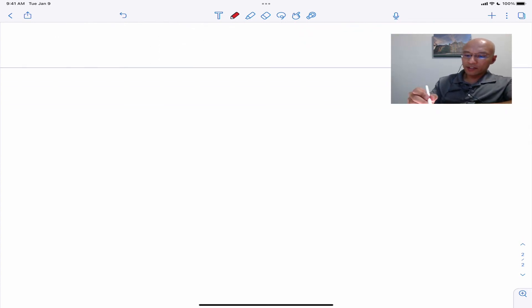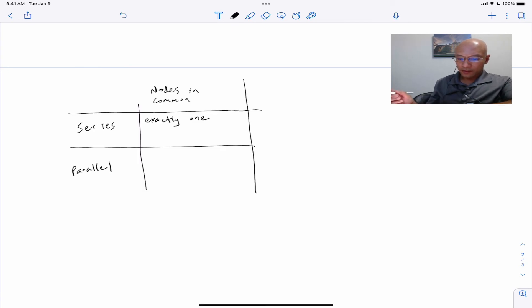So let's write a summary table. So series connections between two elements require exactly one shared node and no other current carrying connections. And when you have series elements, you have the same current.